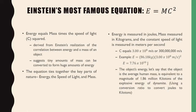Einstein's most famous equation: E equals MC squared. Energy equals mass times the speed of light, which is the constant C, squared. It derived from Einstein's realization of the correlation between energy and mass of an object. It suggests tiny amounts of mass can be converted to form huge amounts of energy. The equation ties together the key parts of nature — energy, the speed of light, and mass. Energy is measured in joules, mass is measured in kilograms, and the constant speed of light is measured in meters per second.